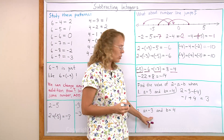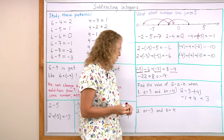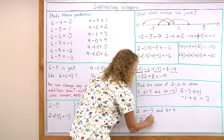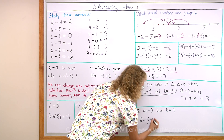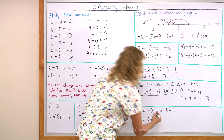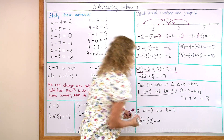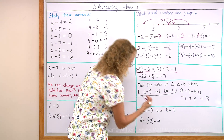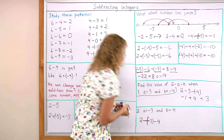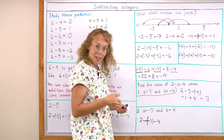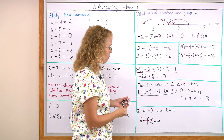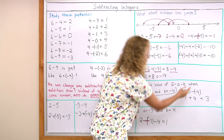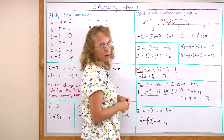Let's see what happens when we switch the signs. I take 2 minus a, where a is negative 3, and then minus b. Let's change this into an addition: I get 2 plus 3, which is 5, minus 4 equals 1. This is a totally different result, which was to be expected.